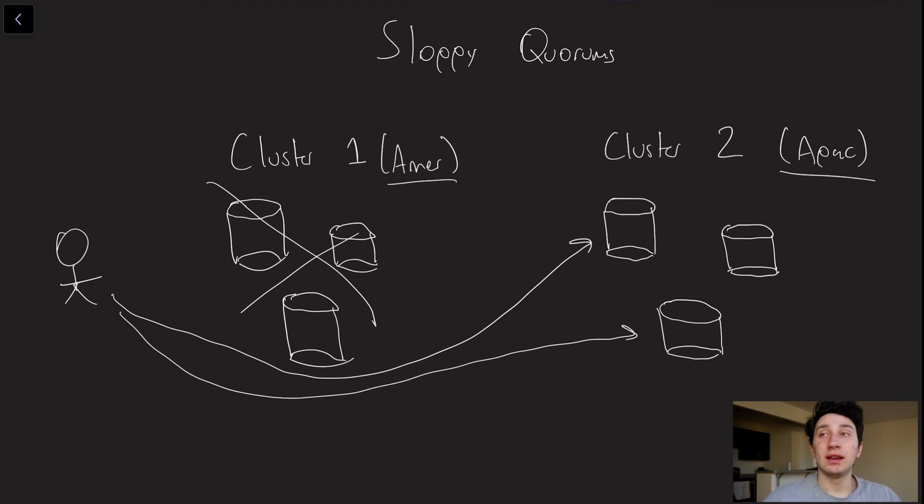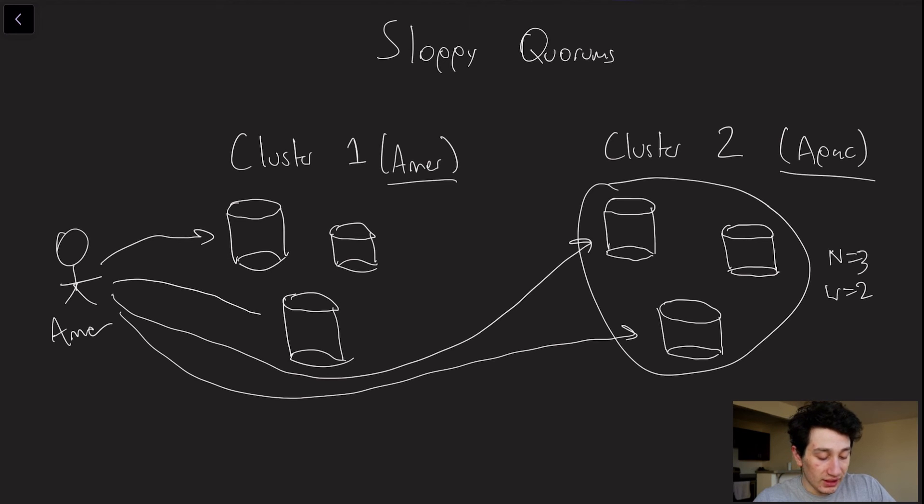And now, as a result, what a smart system might do that's resilient is they start routing writes from an American user to the APAC cluster. And so these are still going to be quorum writes, because as you can see, N is equal to 3, and W is going to be equal to 2. We're still writing to two nodes, and those are going through successfully. But let's say all of a sudden that cluster one comes back up. You know, someone plugs the data center back in, everything's good to go. And now this guy reads from cluster one, because that's where his writes are actually being sent. He is not going to see the writes that he made before, because they're in cluster two. And so that is the concept of a sloppy quorum.